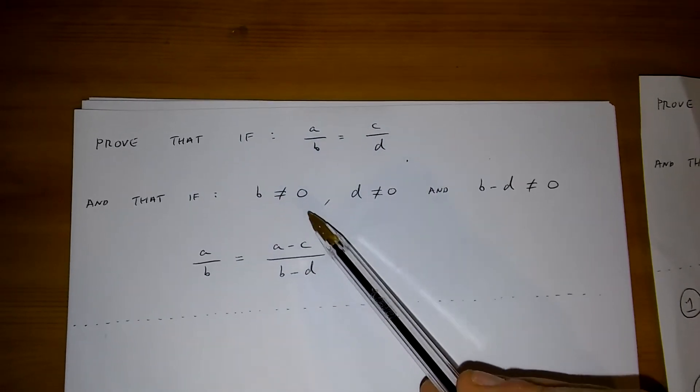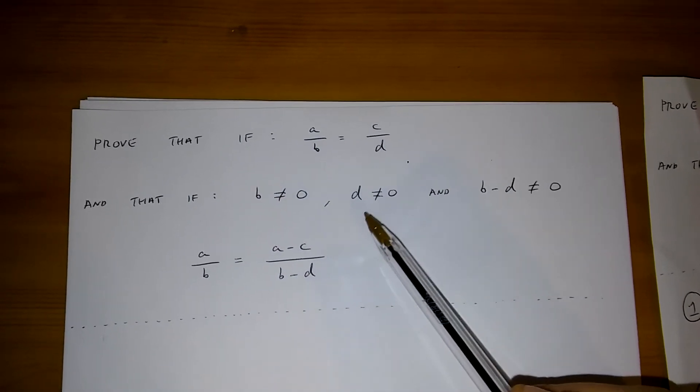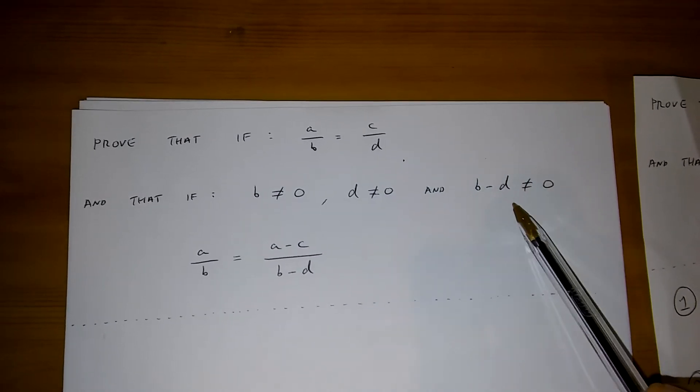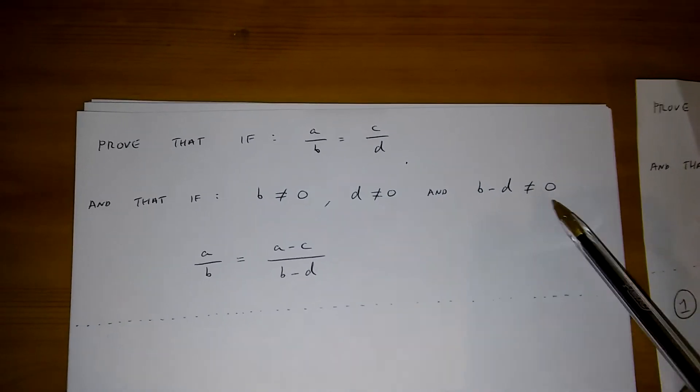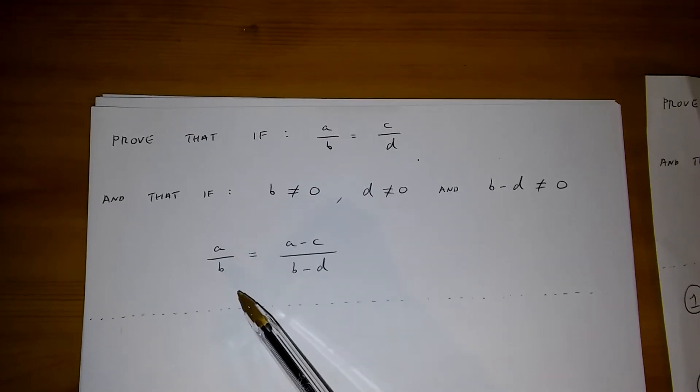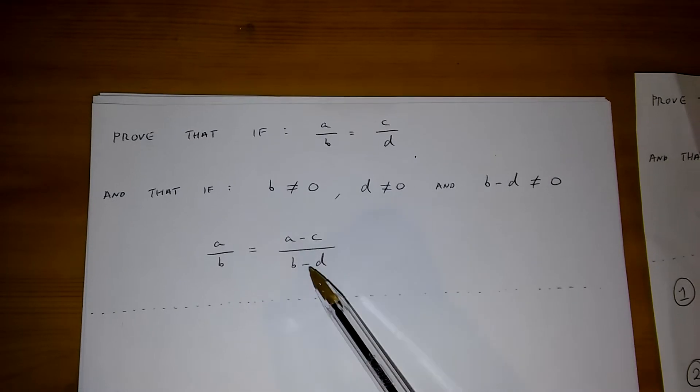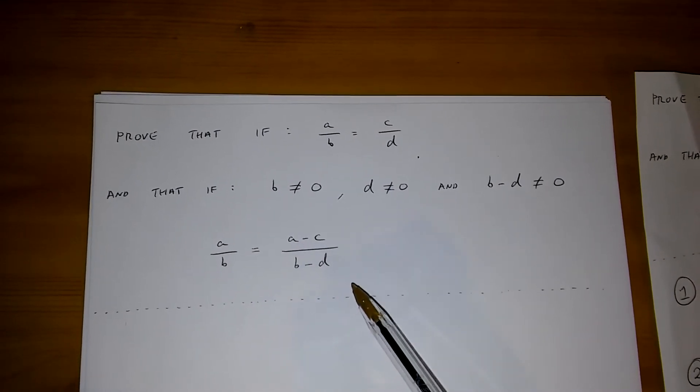and that if b is not equal to zero, and d is not equal to zero, and b minus d is not equal to zero, then a over b is equal to a minus c over b minus d.